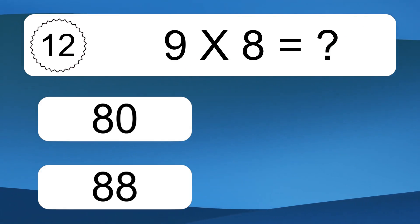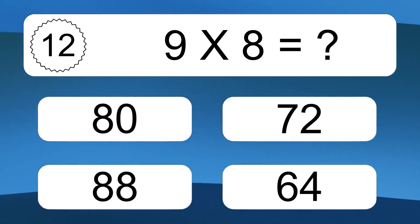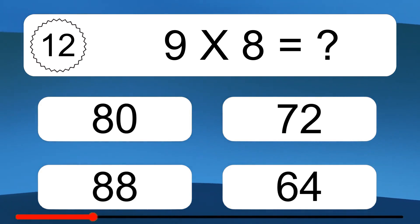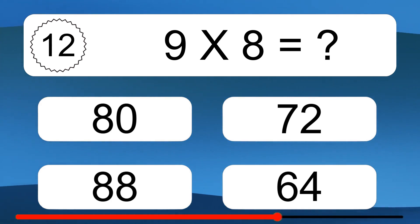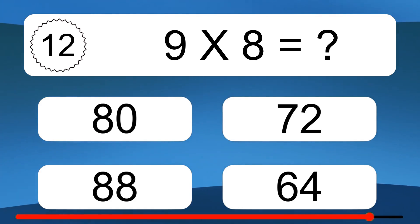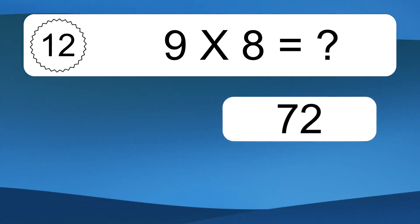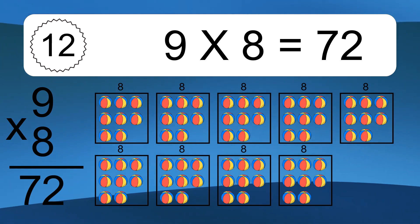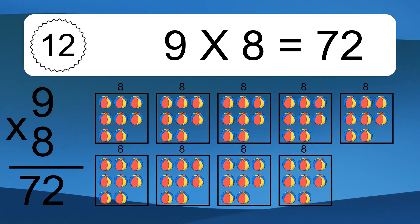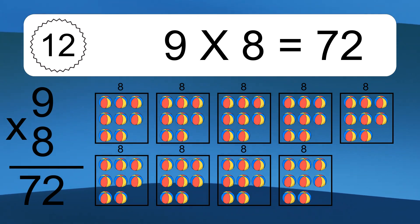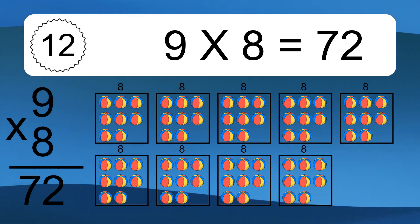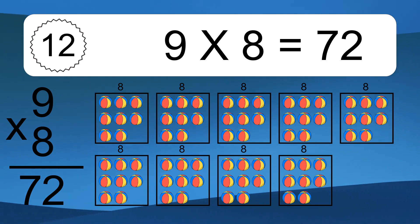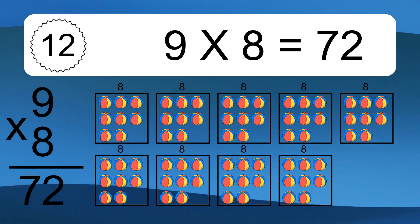9 times 8 equals what? 9 times 8 equals 72. We have 9 boxes, and each box has 8 colorful balls inside. If you count all the balls in all the boxes together, you will have 9 times 8 balls. This equals 72 balls.